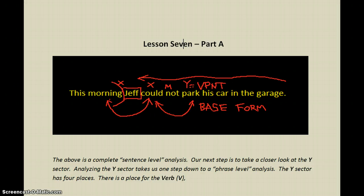Welcome to Lesson 7. I took a sentence that we've done so far: 'This morning, Jeff could not park his car in the garage,' and I've analyzed it. I found the shifters, the two X-word places, the subject, the predicate, and the ties. I've labeled the form of the verb — it's the base form — and I can see that the predicate, the Y, is a verb phrase with no time. This is a complete sentence-level analysis.